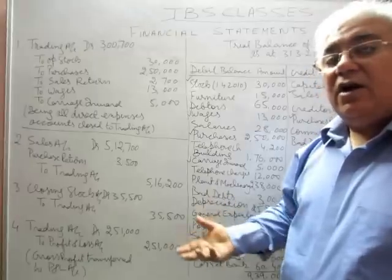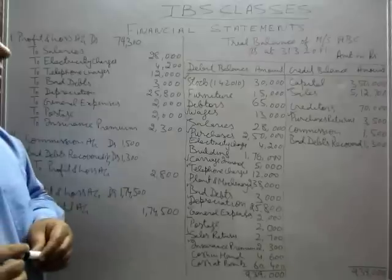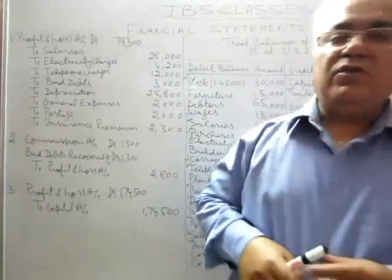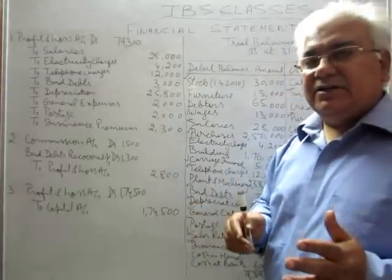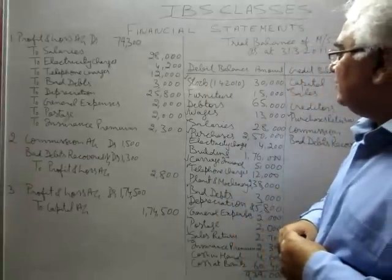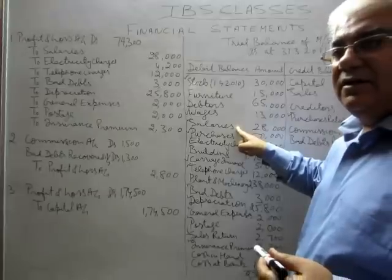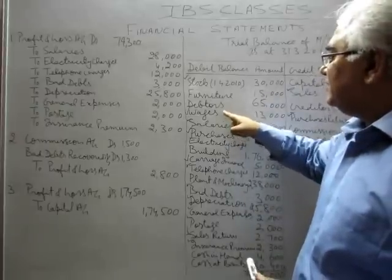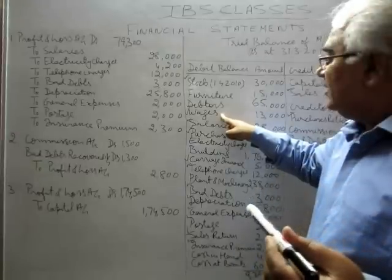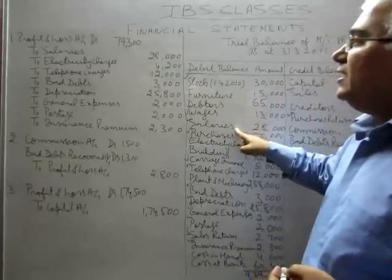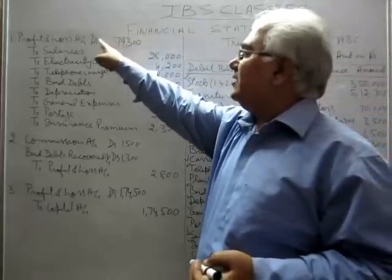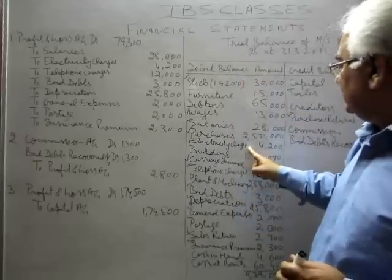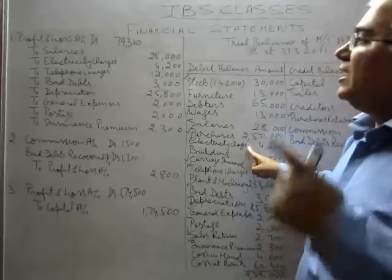Now I will tell you how the entries for profit and loss account are prepared. In profit and loss account, all those expenses will be debited which are of indirect nature. Salaries means amount paid to office workers or people making sales — this is different from wages, which means money paid to labor. Salaries will be debited to profit and loss account; entry is: profit and loss account debited to salaries.